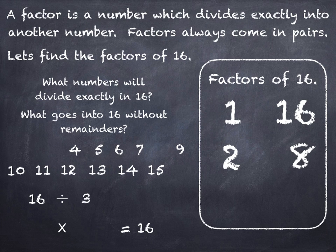Now does 3 divide exactly into 16 without remainders? No, it doesn't. So 3 isn't a factor. Let's put it back up. What about 4? 16 divided by 4 is 4. 4 times 4 is 16. So 4 is another factor of 16.